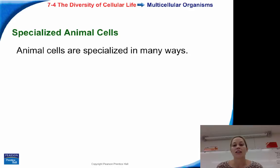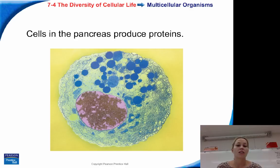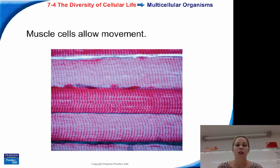Animal cells are specialized in many ways. Animal cells are found in multicellular organisms. Red blood cells are an example of a specialized cell used to transport oxygen. Cells in the pancreas are used to produce proteins. There are also other cells in the pancreas called islet cells that are used to produce insulin, which regulates blood sugar. Muscle cells allow for movement.